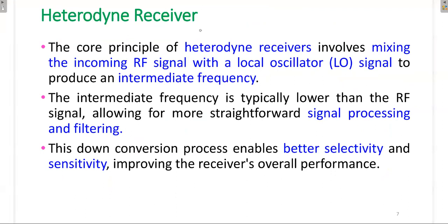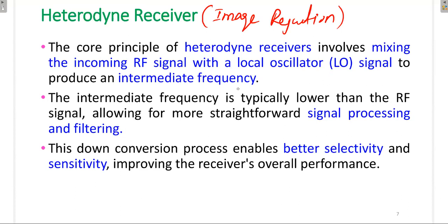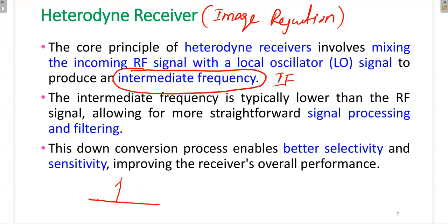Next is the Heterodyne Receiver. This is a two-stage conversion - instead of a single stage, we use two-stage conversion, and it has image rejection capability. The principle of the Heterodyne Receiver involves mixing the RF signal with the local oscillator signal to produce an intermediate frequency (IF) signal, not directly the message signal. Whenever we have a signal at some carrier frequency, it is first down-converted to some IF frequency.